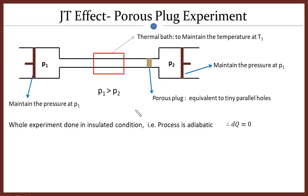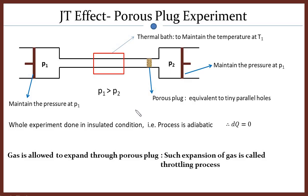A process where gas is allowed to expand through a porous plug — such expansion of gas is called a throttling process. Sometimes you will find in books that this porous plug experiment is referred to as a throttling process. Both are the same.